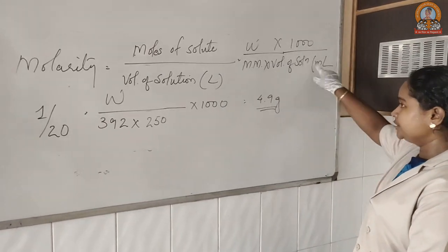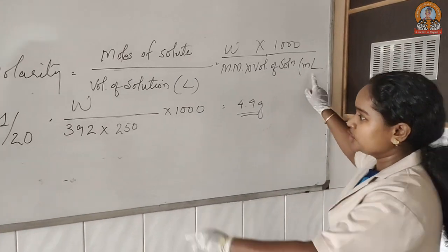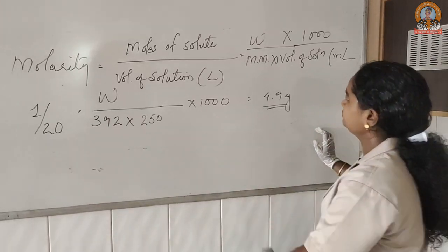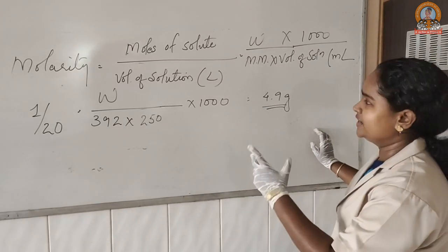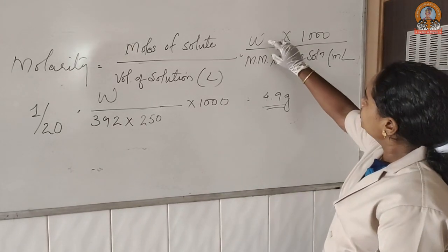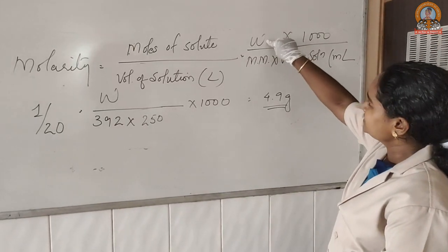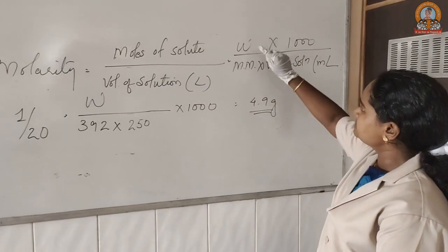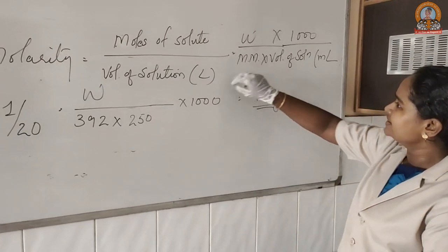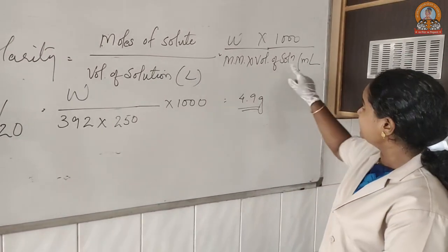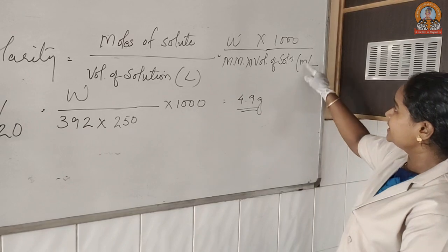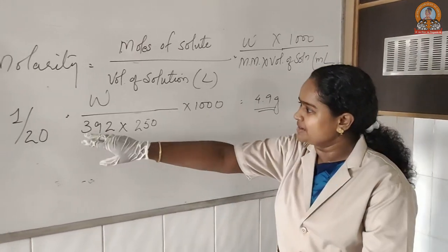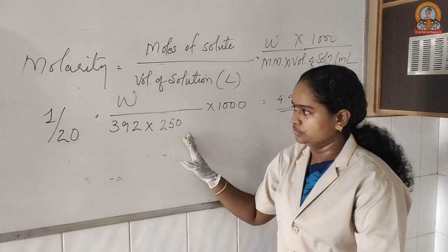You have to convert it into milliliters because you have to prepare the standard solution in a 250 mL standard flask. Moles of solute is given mass divided by molar mass. Volume of solute is taken in milliliters, that's why the whole formula is multiplied by 1000.